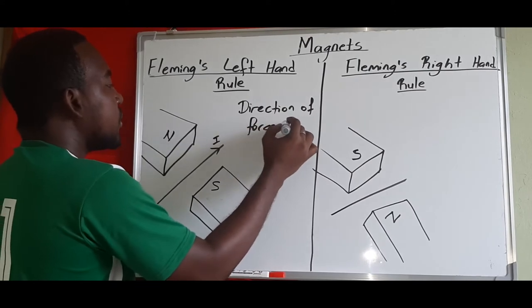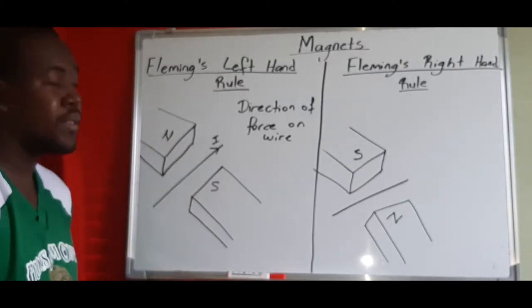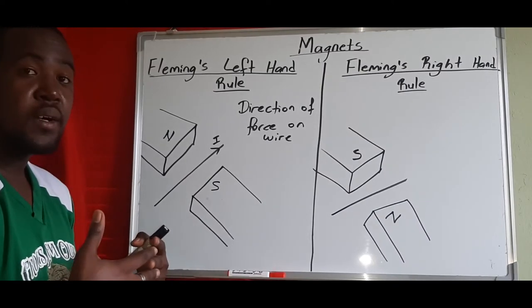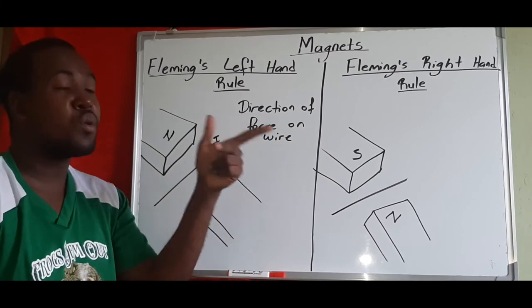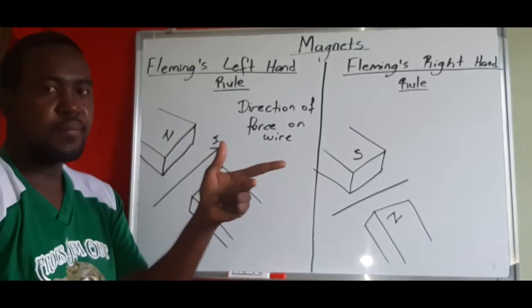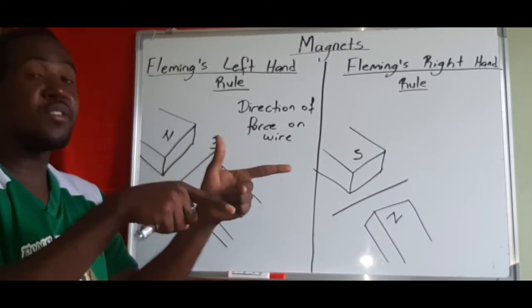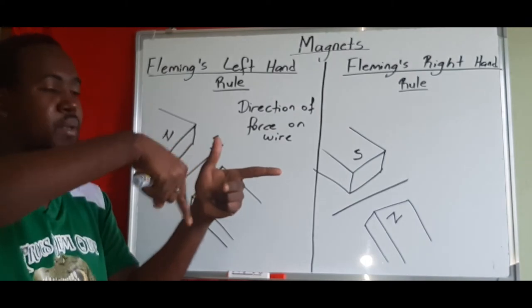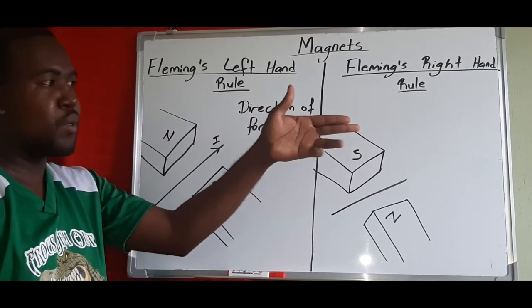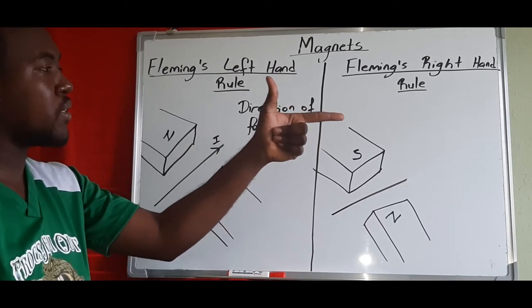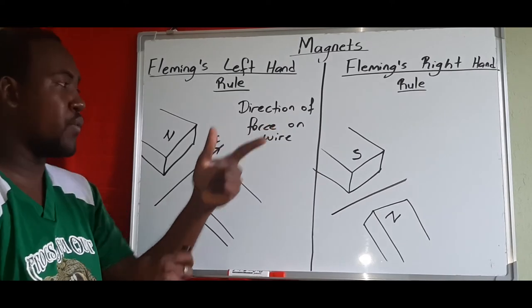Fleming's left-hand rule tells us the direction of the force on a wire. The magnets have their own magnetic field, the wire with current has its own magnetic field, and their interaction produces a force. The rule is to hold your three first fingers at 90 degrees to each other — thumb at 90 degrees to index finger, thumb at 90 degrees to middle finger, and index finger at 90 degrees to middle finger.